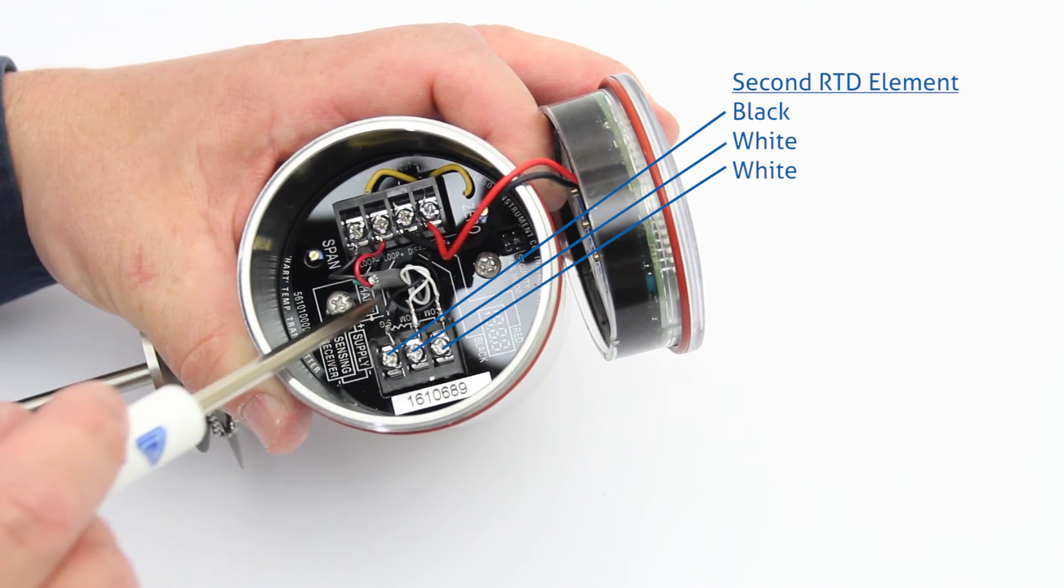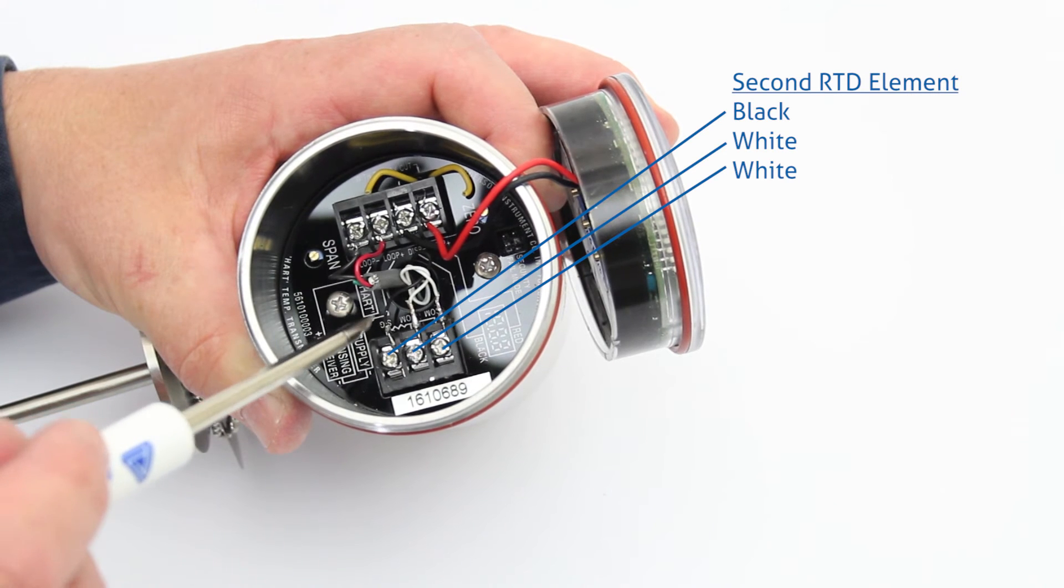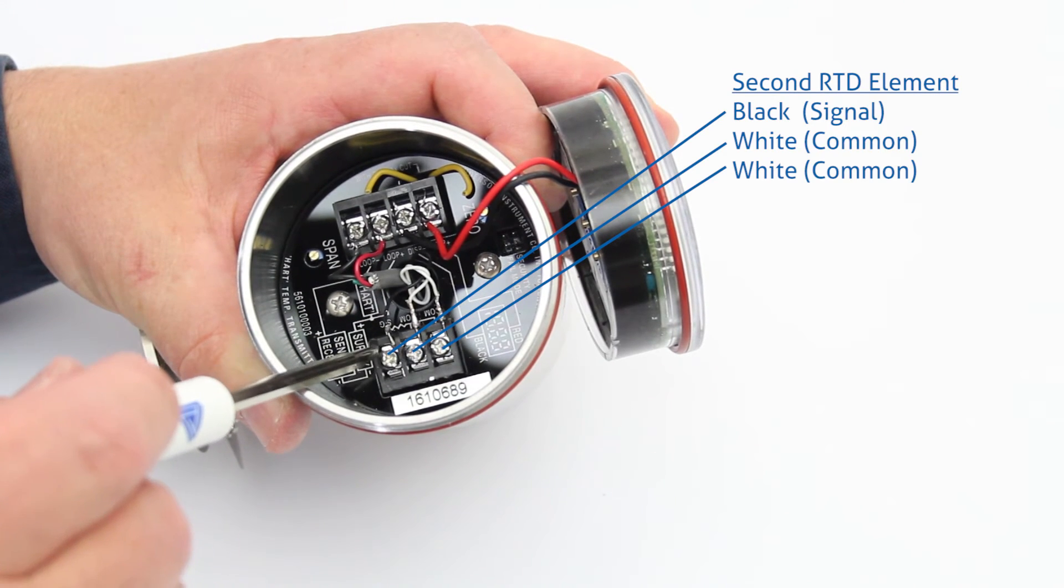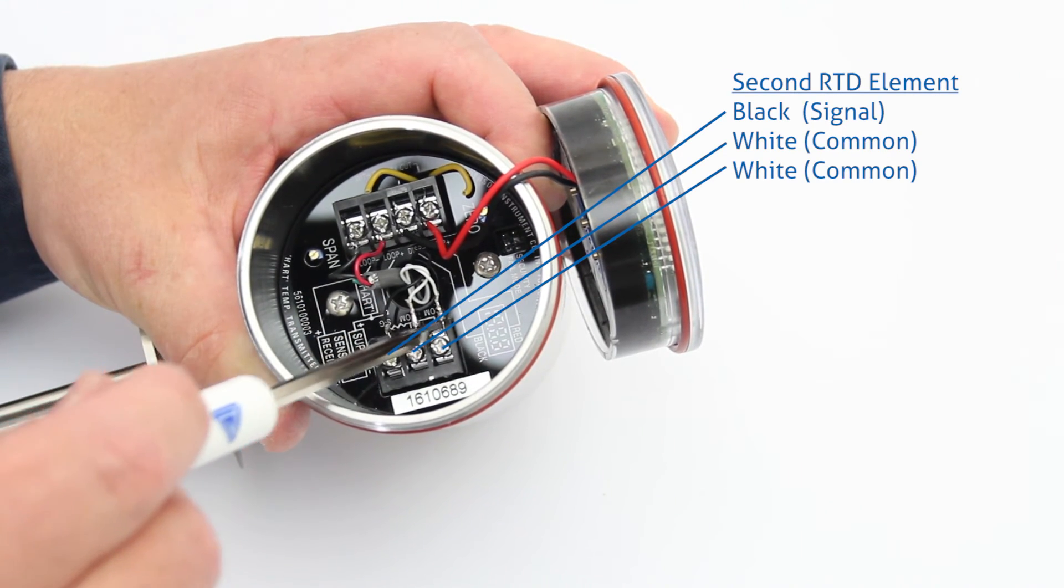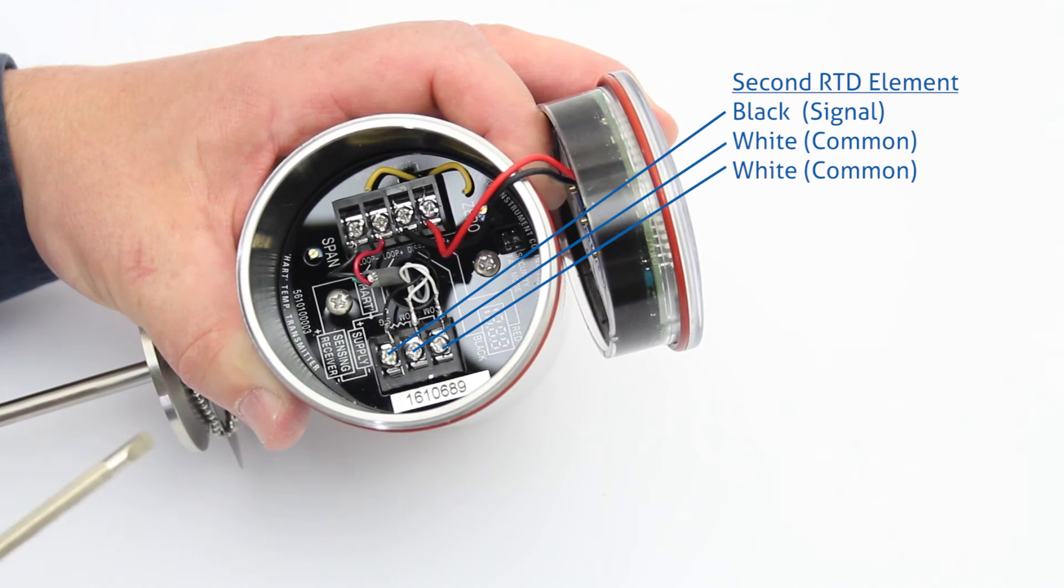Then over on the other side we have our second RTD element. We have the black wire which is going to go to the signal terminal and we have the two white wires that are going to go to the common terminals.